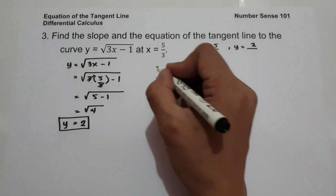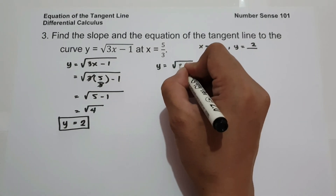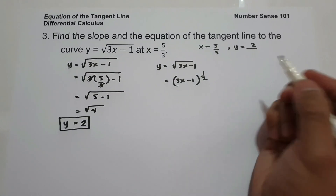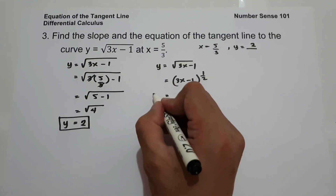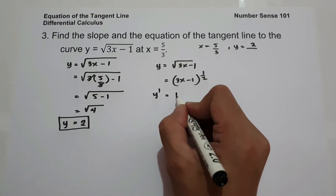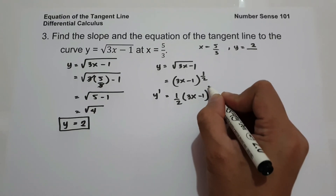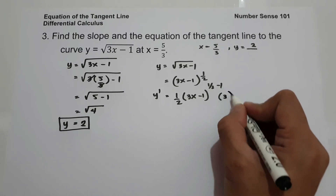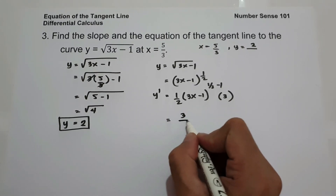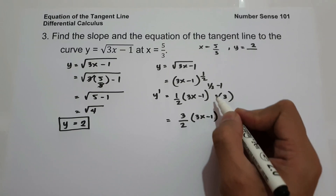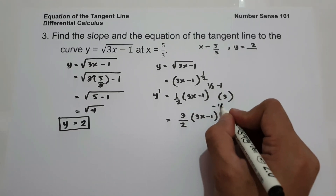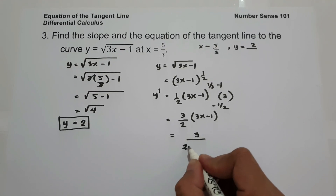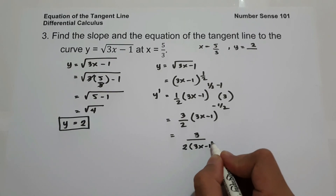To find the slope, rewrite y equals square root of 3x minus 1 as (3x minus 1) raised to 1/2. Using the chain rule, the derivative is 1/2 times (3x minus 1) raised to (1/2 minus 1), times the derivative of the inside (3x minus 1), which is 3. This gives 3 over 2 times (3x minus 1) raised to negative 1/2. To eliminate the negative exponent, rewrite as 3 over 2 times 1 over square root of 3x minus 1.